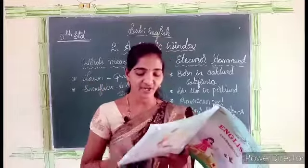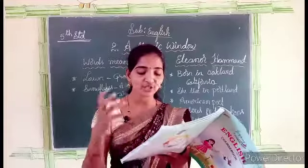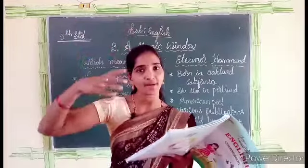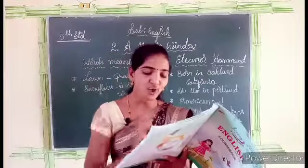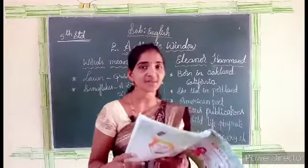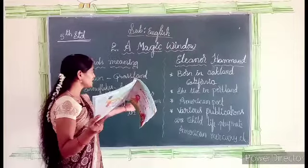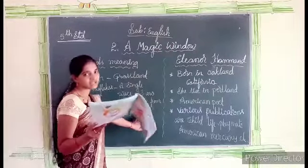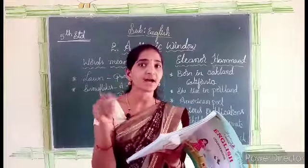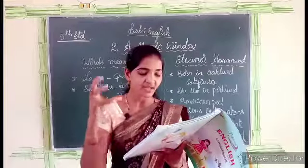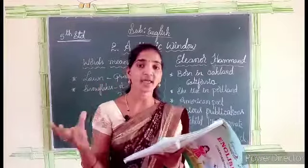Sometimes it shows windblown rain — the window shows rain blown by the wind, as if the rain is coming with the wind. Or snowflakes cold against the pane. Snowflakes means a single piece of snow that falls from the sky — like small pieces of snow falling gently. Sometimes the window shows snowflakes cold against the pane.